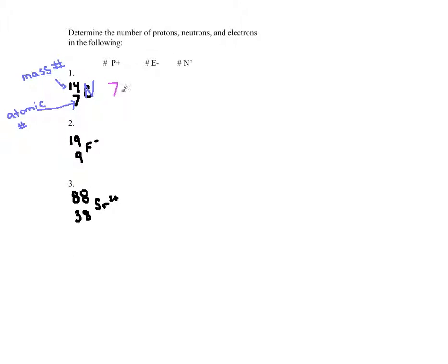For electrons, since nitrogen here shows no charge, that tells you your number of protons has to equal your number of electrons. Since it's not a cation — not positively charged — and not an anion — not negatively charged — I'm going to have the same number of protons and electrons. For neutrons, since mass number equals protons plus neutrons, all you have to do is take 14 and subtract 7, and you get 7 for your number of neutrons. Really nice and easy.